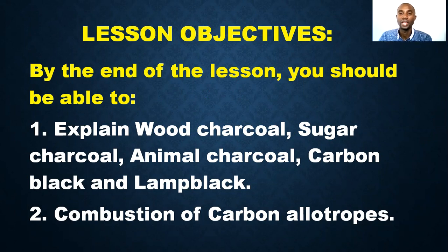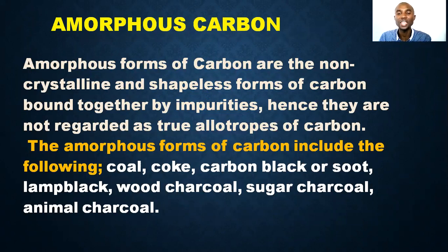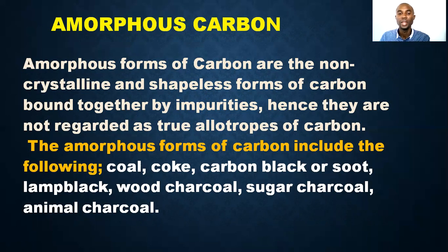We are going to see what happens when carbon burns in air, either in a full supply of air or in a limited supply of air. Amorphous forms of carbon are the non-crystalline and shapeless forms of carbon bound together by impurities. In the last video we talked about allotropes of carbon which are diamond and graphite. These forms are also carbon but they are not allotropes of carbon because they are not pure substances of carbon — rather they are mixed with several impurities.